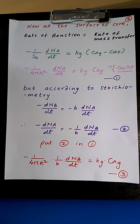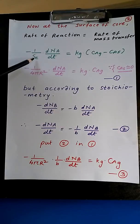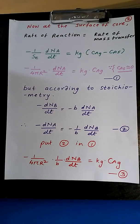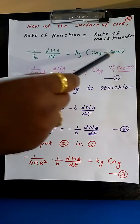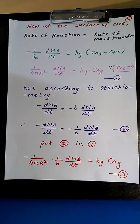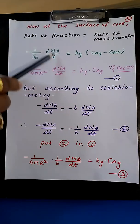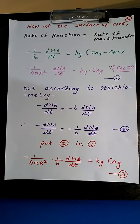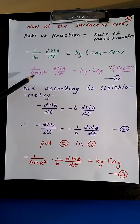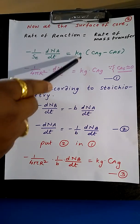Now at the surface of the core, the rate of reaction equals the rate of mass transfer due to the heterogeneous reaction. The rate of reaction will be minus 1 upon the exposed surface into dNA by dt, equal to the rate of mass transfer which is Kg into (CAg minus Cs), where (CAg minus Cs) is the driving force. The external surface is 4πR² into dNA by dt, and since Cs is approximately 0, CAg minus Cs equals CAg.